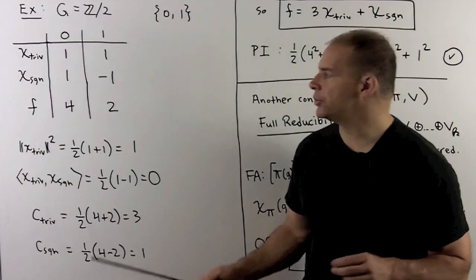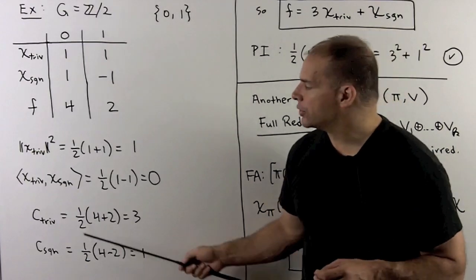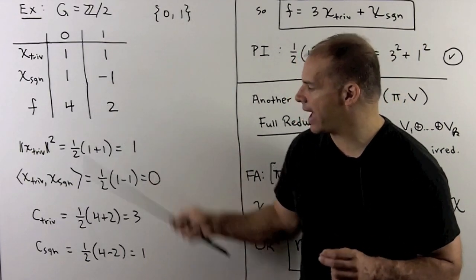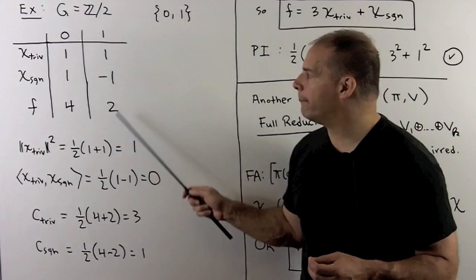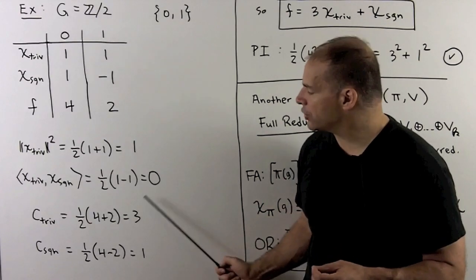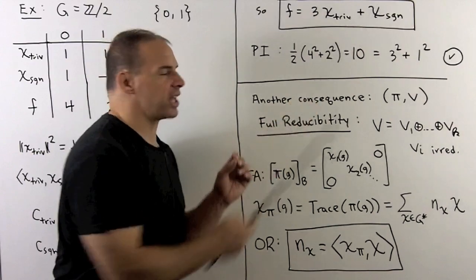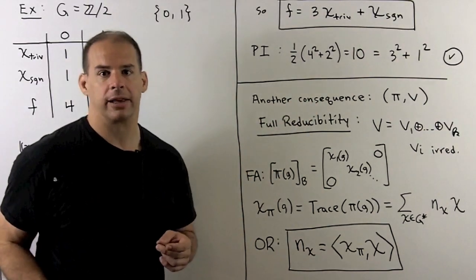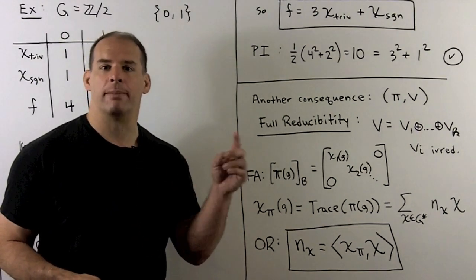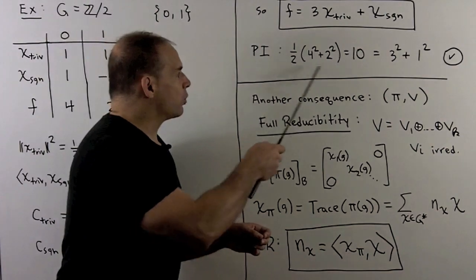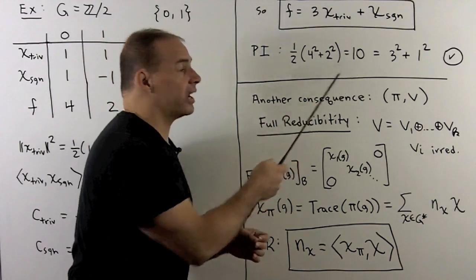To check Fourier's trick and Parseval's identity, use the function f with f(0)=4 and f(1)=2. Applying Fourier's trick: the inner product of f with the trivial character gives one-half times (4+2) equals 3. The inner product of f with the sign character gives (4−2)/2 equals 1. So the coefficients give f = 3χ_triv + χ_sign. Expanding out, we recover f(0)=4, f(1)=2. For Parseval's identity: the length squared of f is one-half times (16+4)=10, and 3 squared plus 1 squared also equals 10. That checks out.